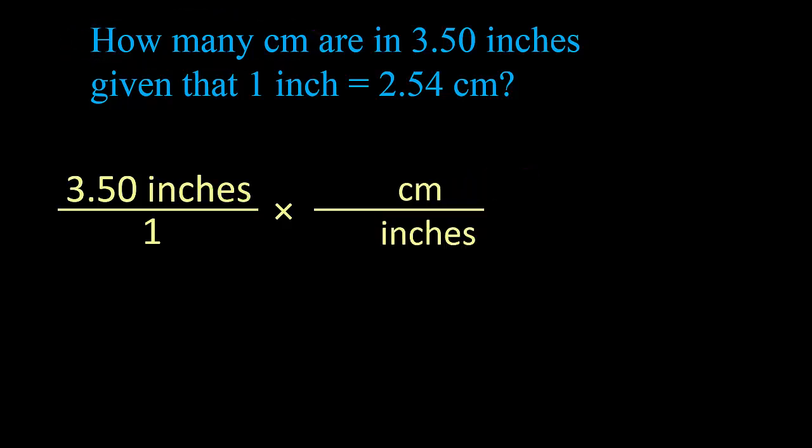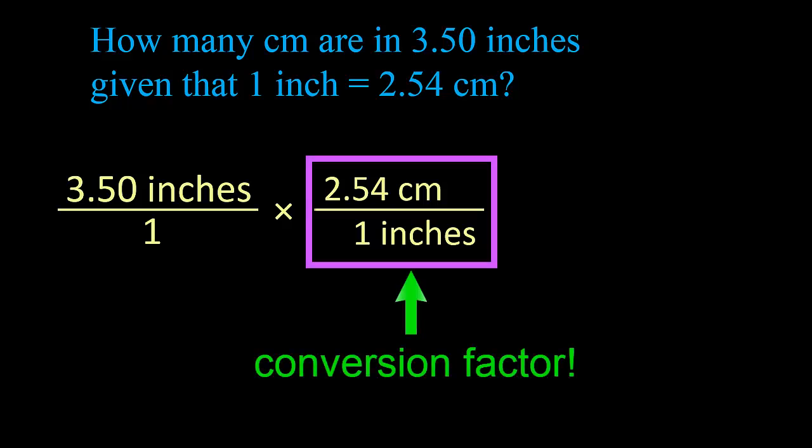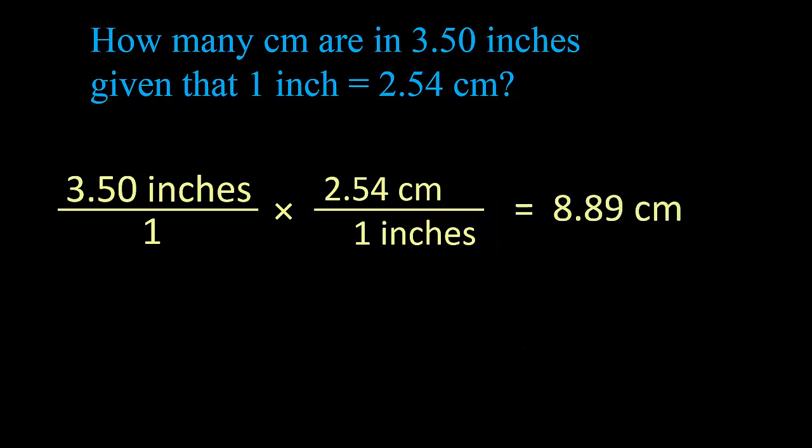The last step is putting the numerical relationship between the two units, which is given in the problem. For every one inch, there are 2.54 centimeters. The fraction is called a conversion factor. The answer is 8.89 centimeters.